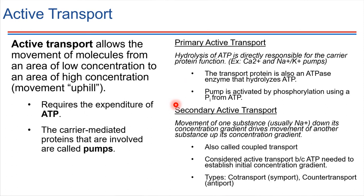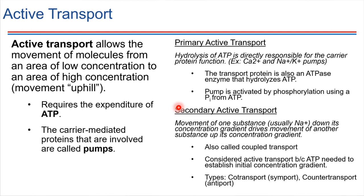Secondary active transport, just like its name implies, involves two things that have to happen. First, there would have to be some sort of a concentration gradient established with some molecule — a lot of times it's going to be a sodium ion — becoming more highly concentrated on one side of the membrane, which often involves ATP. Then that molecule flows back down its concentration gradient to drive the movement of something else.